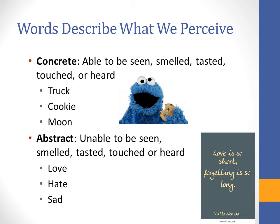Words also describe what we perceive. There are concrete things — we can see, smell, taste, touch, or hear them: a truck, a cookie, the moon, the Cookie Monster. Then we have abstract ideas — things that are unable to be seen, smelled, tasted, touched, or heard. These are things that are felt.